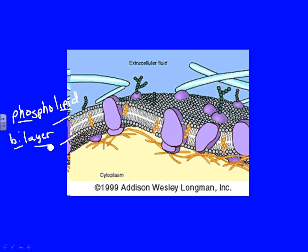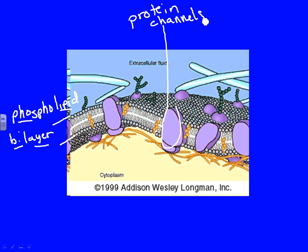Phospholipid stands for phosphate and fat; bilayer means two layers. You need to picture the cell membrane sort of like a soap bubble. If you blow a bubble with soap and look at it, you'll see that the surface is not stationary — stuff is moving around on it. Soap is very much like a phospholipid layer, so you can relate a cell membrane to a soap bubble in that way.